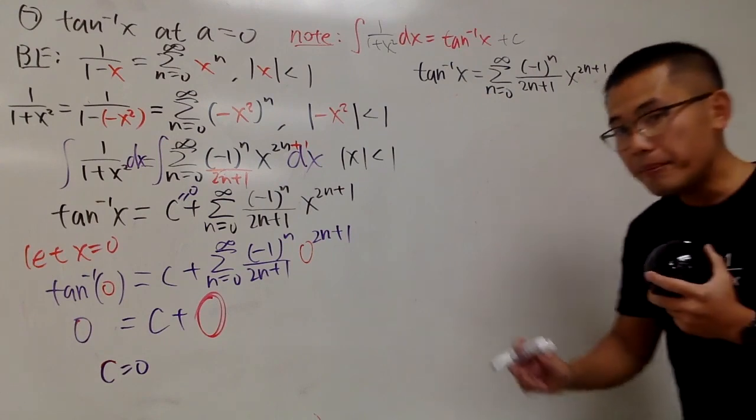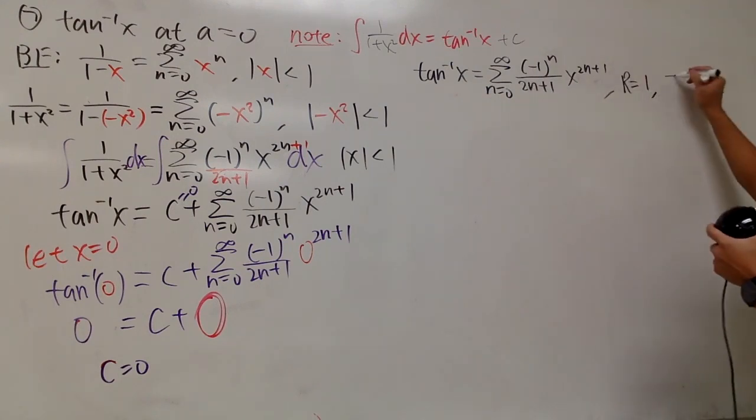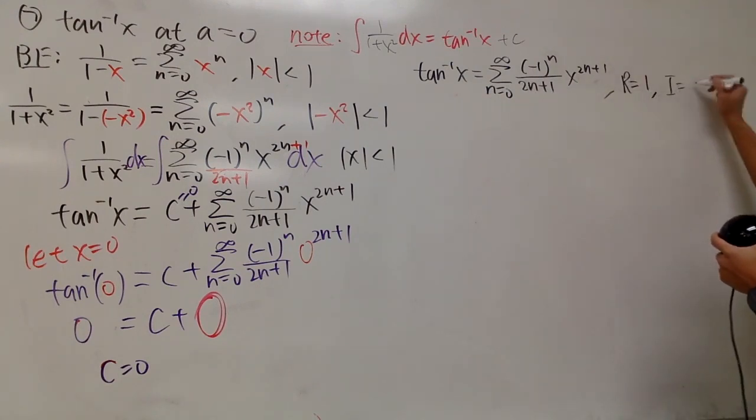So let me write this down. The inverse tangent of x equals the sum as n goes from 0 to infinity of negative 1 to the n's power over 2n plus 1, times x to the 2n plus 1 power. The radius of convergence stays the same since we just integrated, so R equals 1, meaning we go from negative 1 to 1.